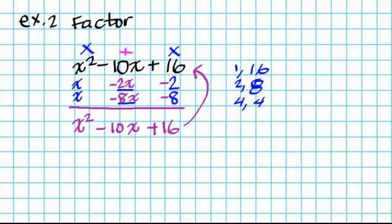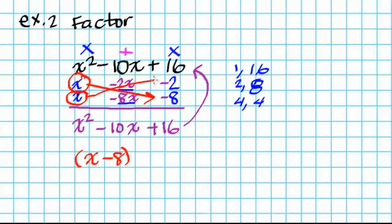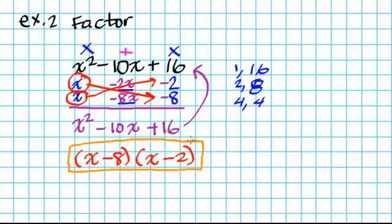So now to write down my factors: I grab the top left x and combine it with that bottom negative 8 — so x minus 8. Then I grab the bottom x and combine it with that top right negative 2 — so x minus 2. My factors of x squared minus 10x plus 16 are x minus 8 times x minus 2.